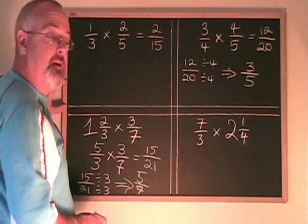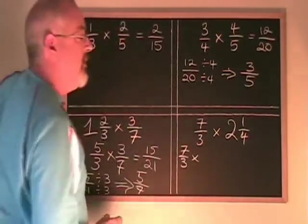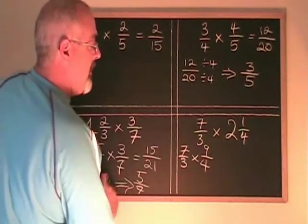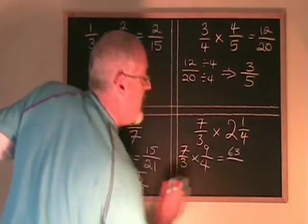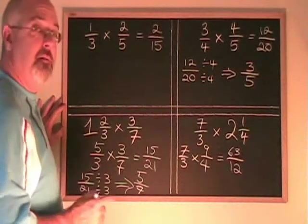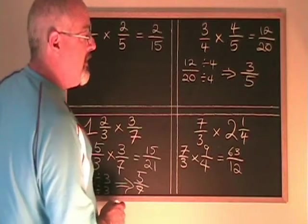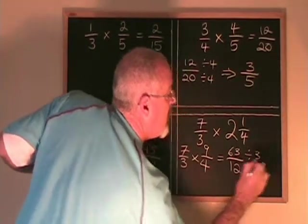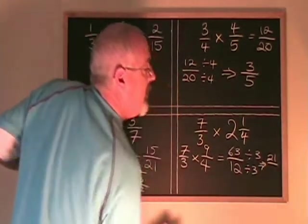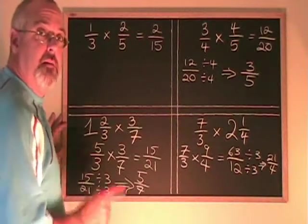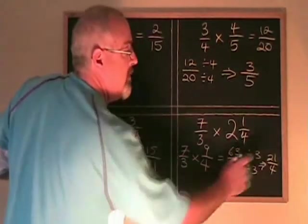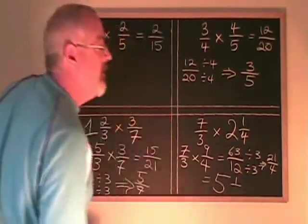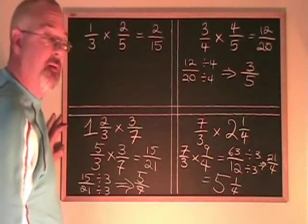Here, the second number is the mixed number, but I'm doing the same thing. 2 times 4 is 8, plus 1 is 9 — the denominator remains the same, so 2 and 1 quarter is equal to 9 quarters. Now I can multiply: 7 times 9 is 63, and 3 times 4 is 12. This can be reduced and converted back into a mixed number. I'll do the reduction first: 63 and 12 have a common factor of 3. 63 divided by 3 is 21, and 12 divided by 3 is 4. 21 fourths is an answer, but I want to convert it into a mixed number. 4 fits into 21 five times, and 21 minus 20 is 1 — so I have 1 left over and the denominator remains the same. My final answer is 5 and 1 quarter.